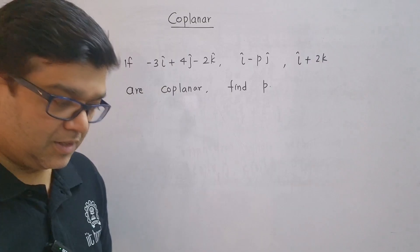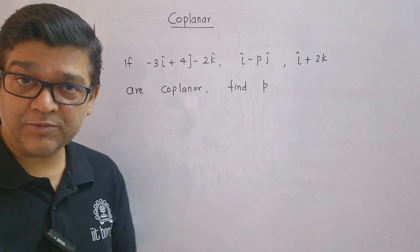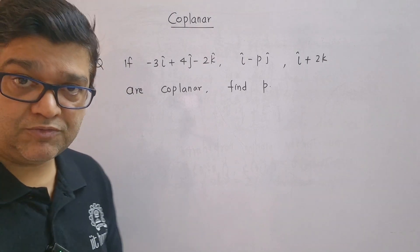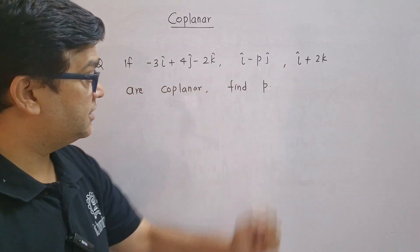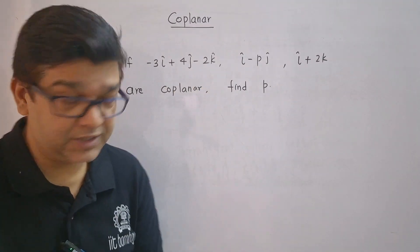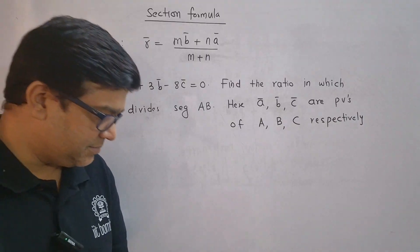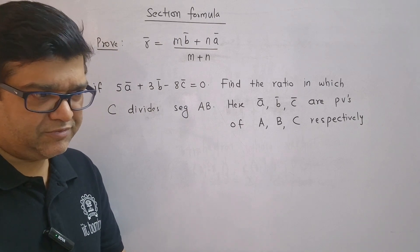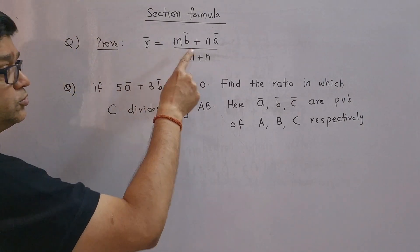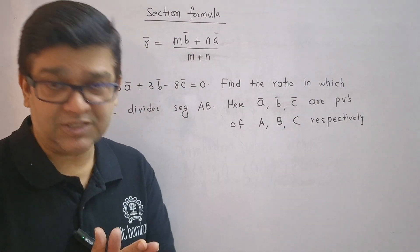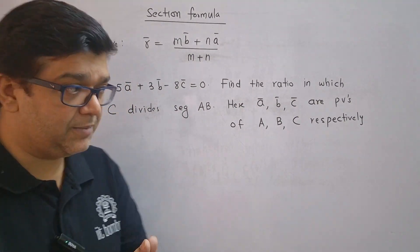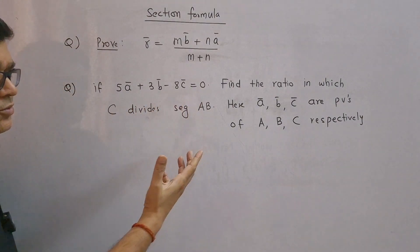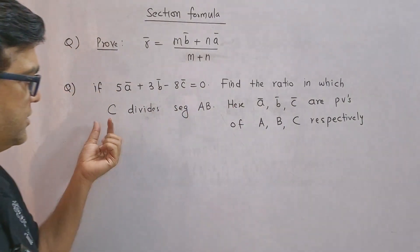They will ask you to find the volume of tetrahedron whose vertices are given. The next important topic is coplanar vectors — questions are asked regularly in HSC board examinations. The most expected question is: given three vectors which are coplanar, find the value of unknown p. Next important questions are problems based on section formula. It has been observed that they frequently ask the proof of section formula, so learn that proof — it is very very important.